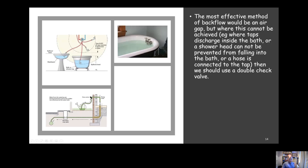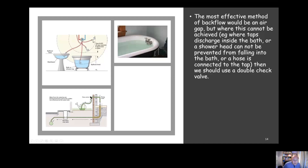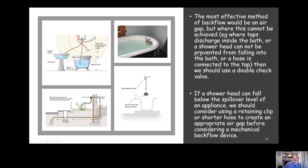Where bath taps are discharging inside the bath below the spillover level — as shown in the picture — we can't achieve an air gap, so we need to use an appropriate backflow prevention method: in this case a double check valve on both the hot and cold to prevent category three bath water being drawn back into the pipe. Where there's a shower head in the bath, there are various methods to maintain an air gap — for example, using a shorter hose or a retaining clip to give an appropriate air gap.